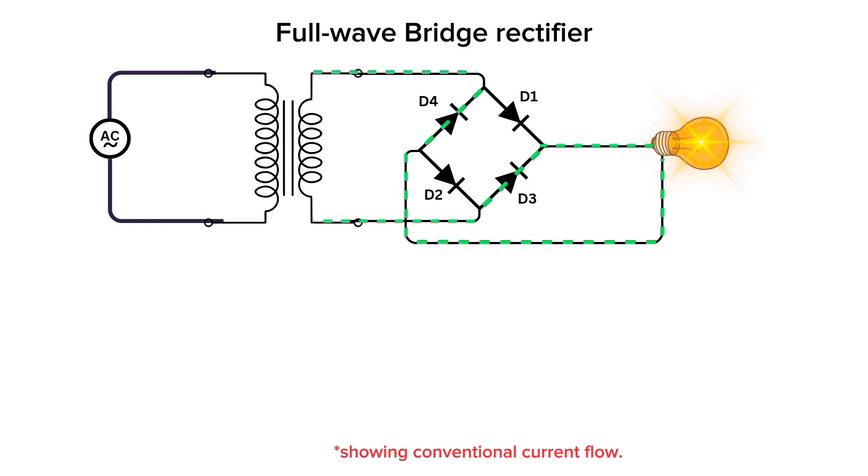During the negative half cycle of the AC input voltage, the diodes D3 and D4 become forward biased, while D1 and D2 become reverse biased. Again, current flows through the load in the same direction from the transformer to the load.